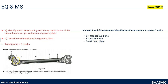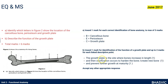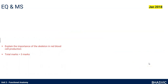Looking at the mark scheme: cancellous bone is B, periosteum is E — the outer layer — and the growth plates are C. For the function of the growth plates: it's where ossification happens, where osteoblasts convert cartilage into bone, and where bones increase in length when we are growing.